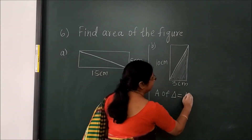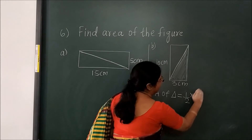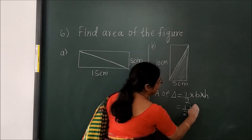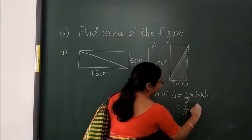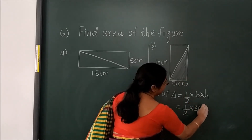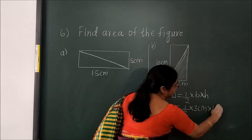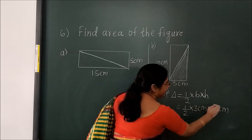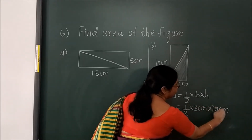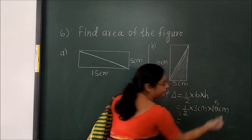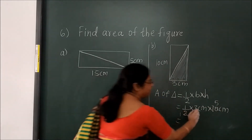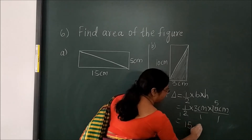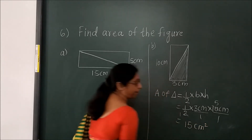So what will we get? The area of a triangle is half base into height. What is the base here? 3. And what is the height? 2 ones are 2, 2 fives are 10. What is left: 3 and 5 — 3 fives is 15, so 15 centimeter squared divided by 2.